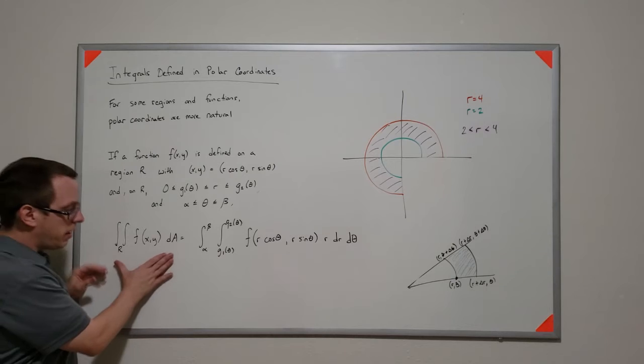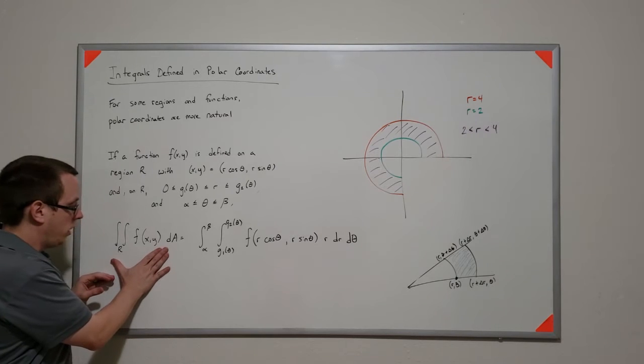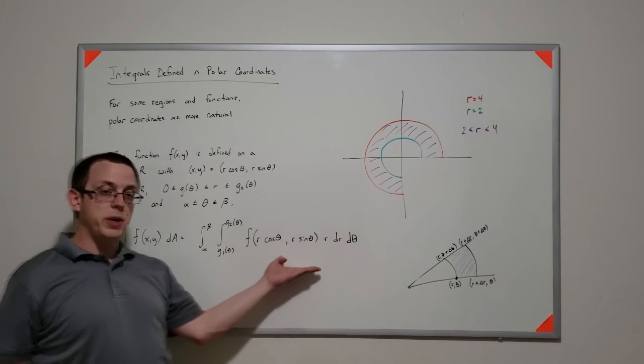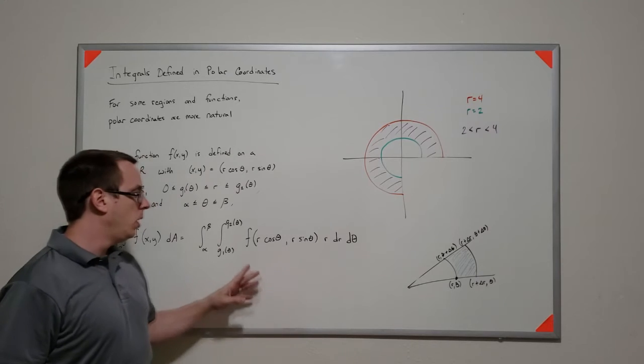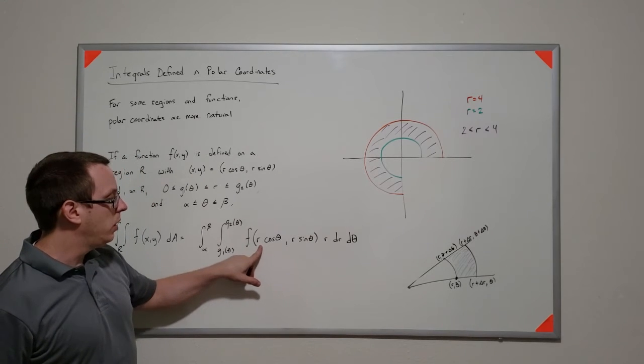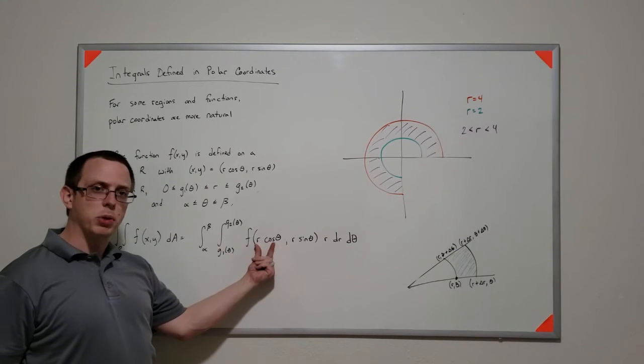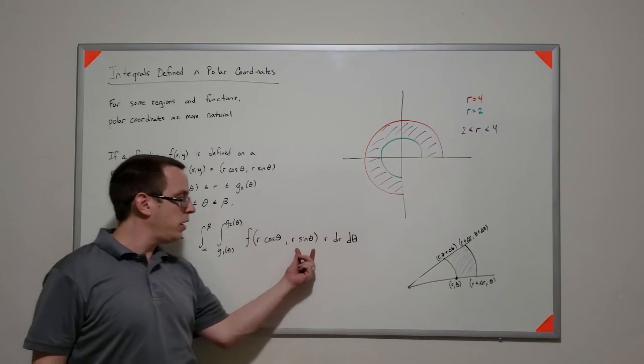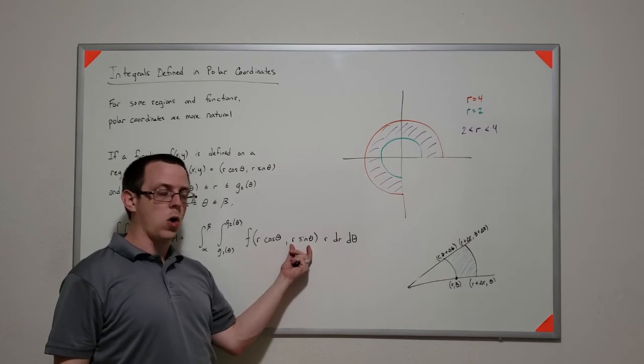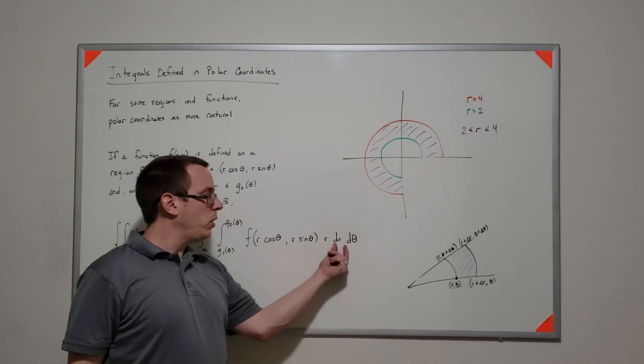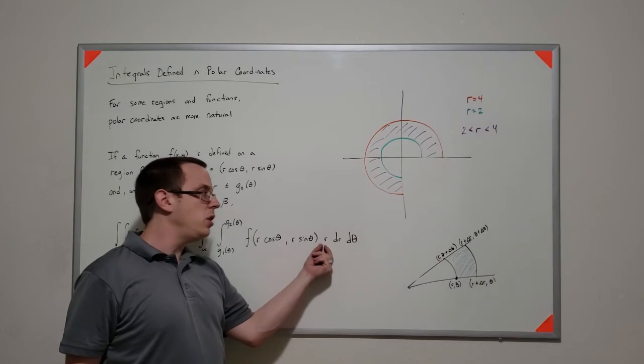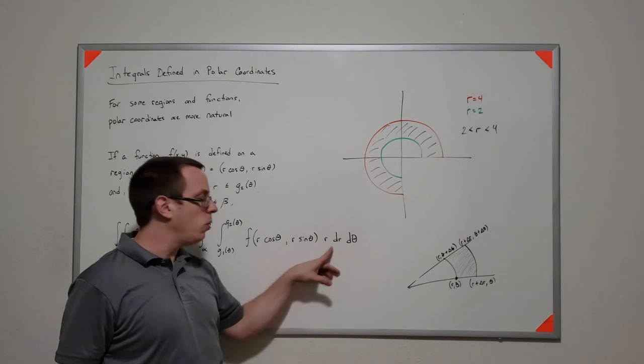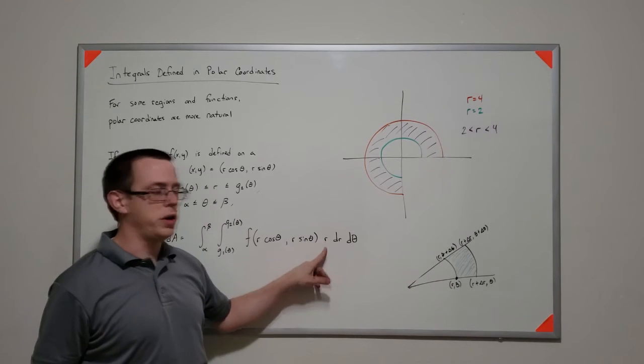And what we find is instead of dealing with a double integral here, we can transfer it to an iterated integral of f, we plug in, instead of plugging in x, we plug in r cosine theta. Instead of plugging in y, we plug in r sine theta, but we don't get just dr dθ, we actually end up with this r dr dθ.